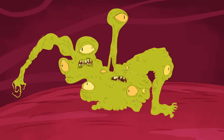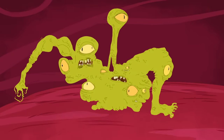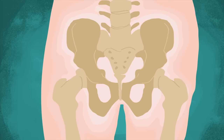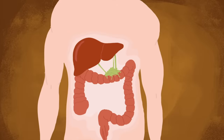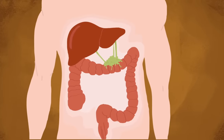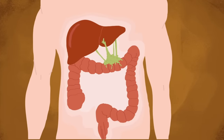Different cancers have been known to have specific sites of metastasis. For example, prostate cancer commonly metastasizes to the bone, while colon cancer metastasizes to the liver.